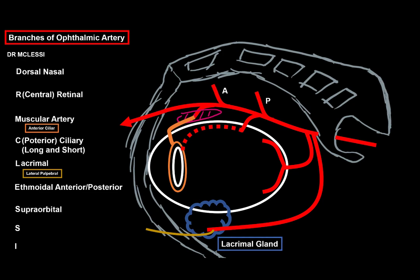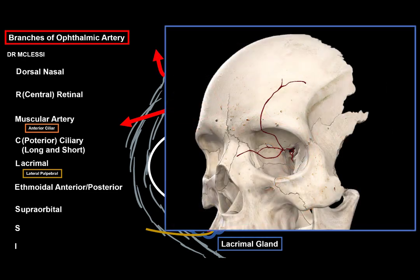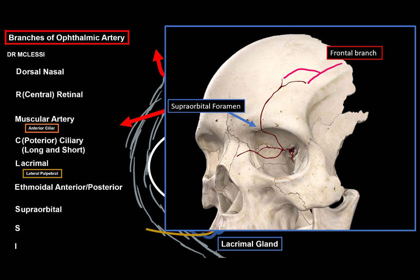Next is the supraorbital artery, which goes upwards through the supraorbital fissure and supplies the skin and muscles of the forehead. And as it does that, it anastomoses with the frontal branch of the superficial temporal artery.